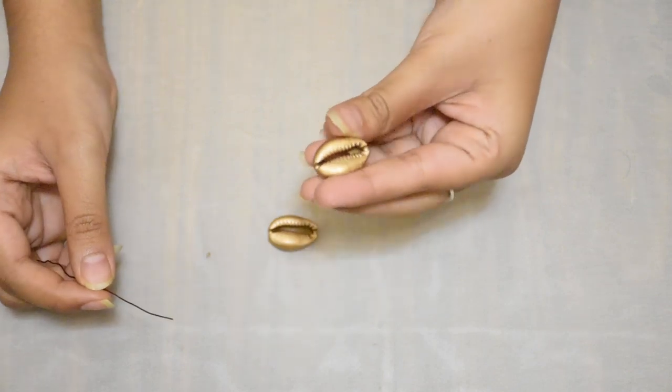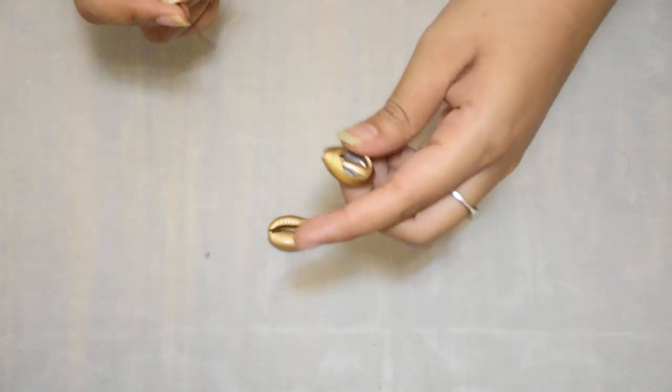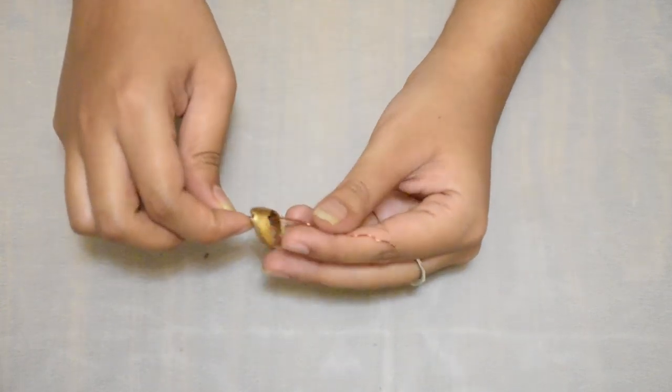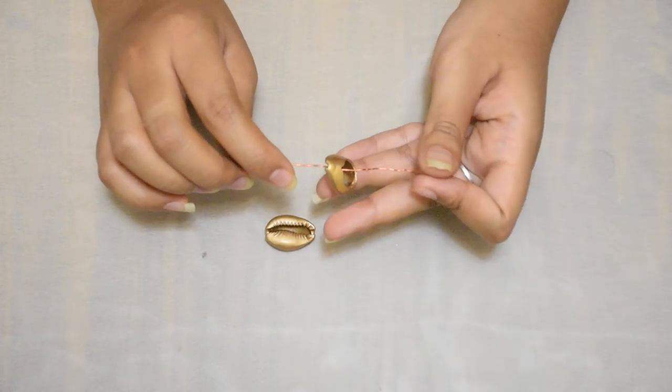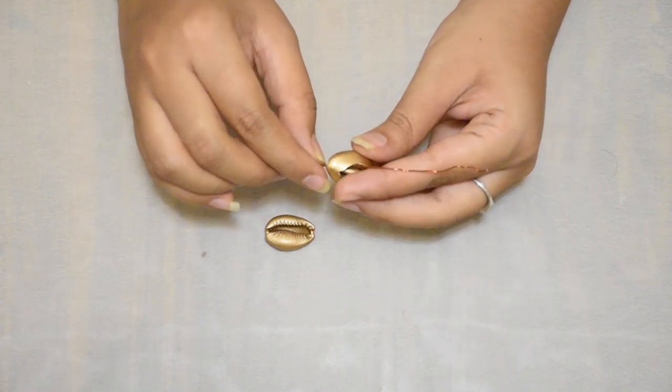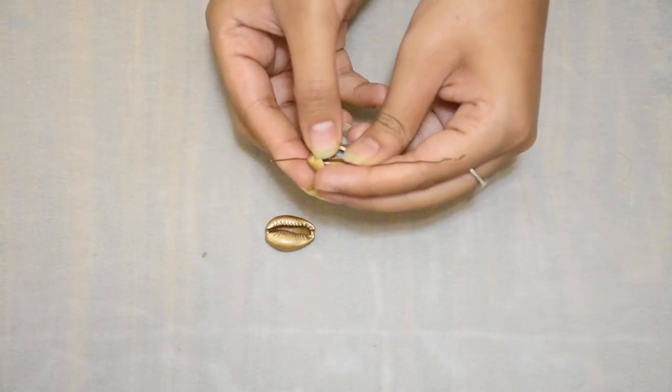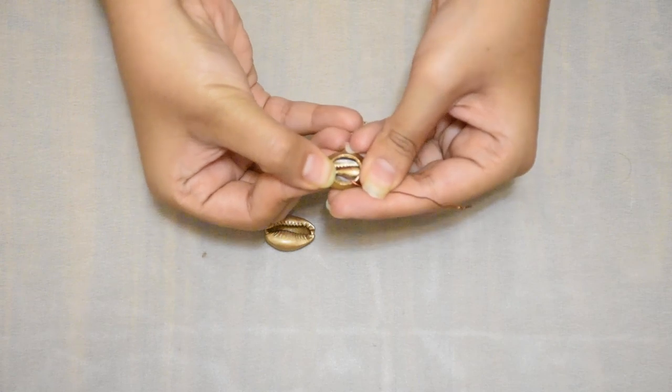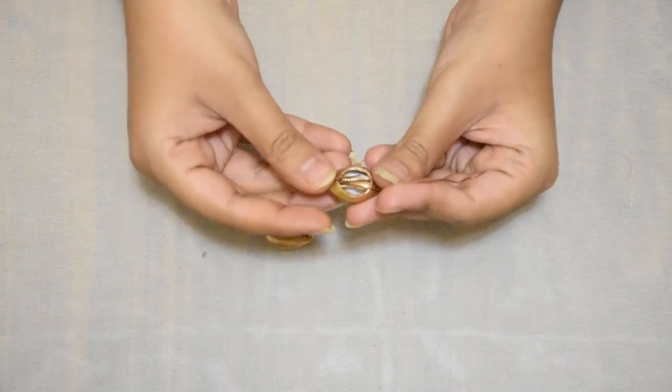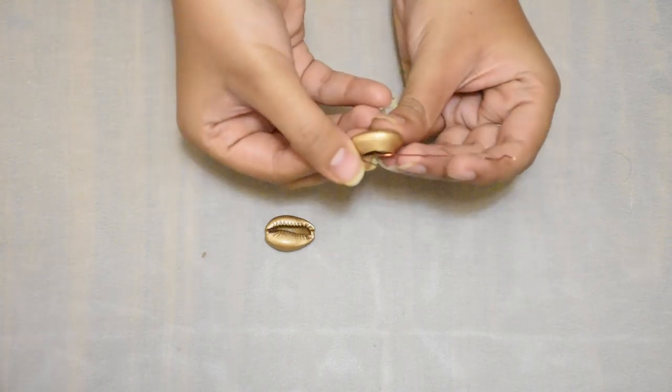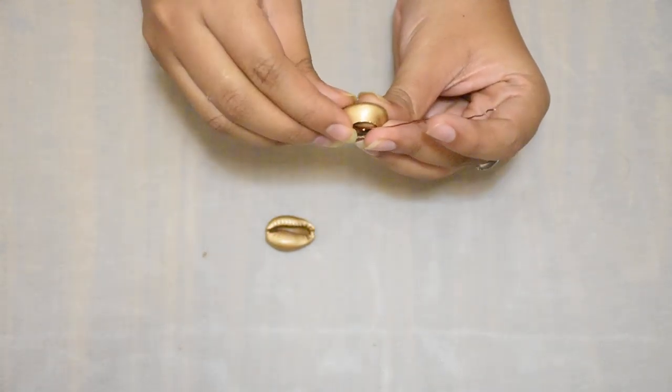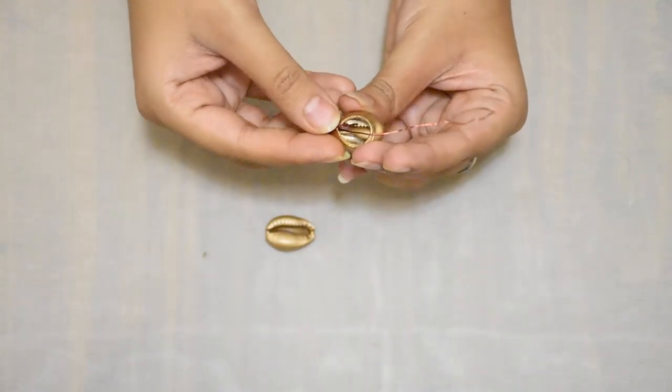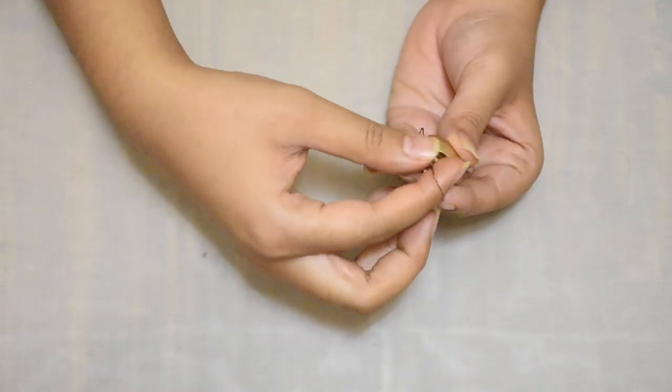Now, we will take the shell and then we will take the wire. We will put the wire from behind the shell and you can see this is how it should look like. Then that extra piece of the wire, we will put it inside the shell. That is why we need to have an open shell so that in the end the wire is not a problem because the edges can really hurt you on the skin.